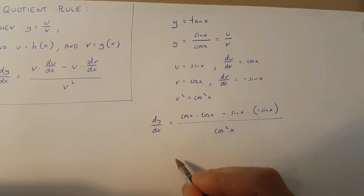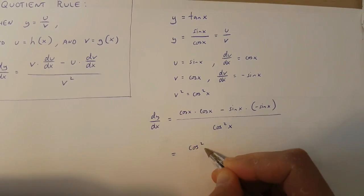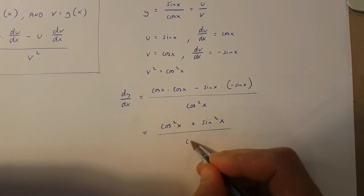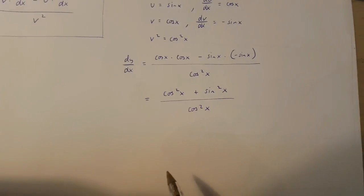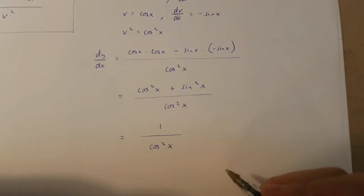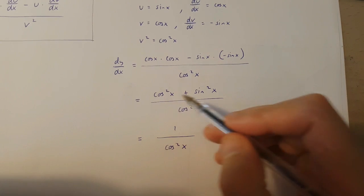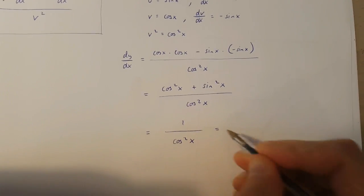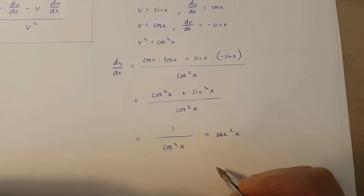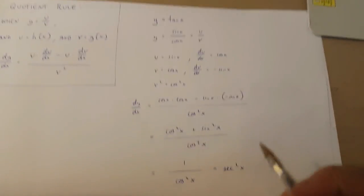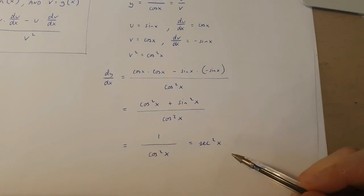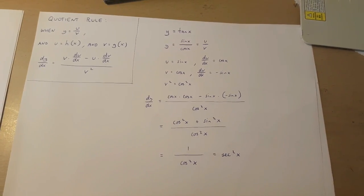This up here is equal to cos x squared plus sin x squared over cos x squared. And this is the same as 1 over cos x squared, because cos x squared plus sin x squared is equal to 1. Now 1 over cos x squared is equal to sec x squared. So we know that when y is equal to tan x, dy over dx is equal to sec x squared.